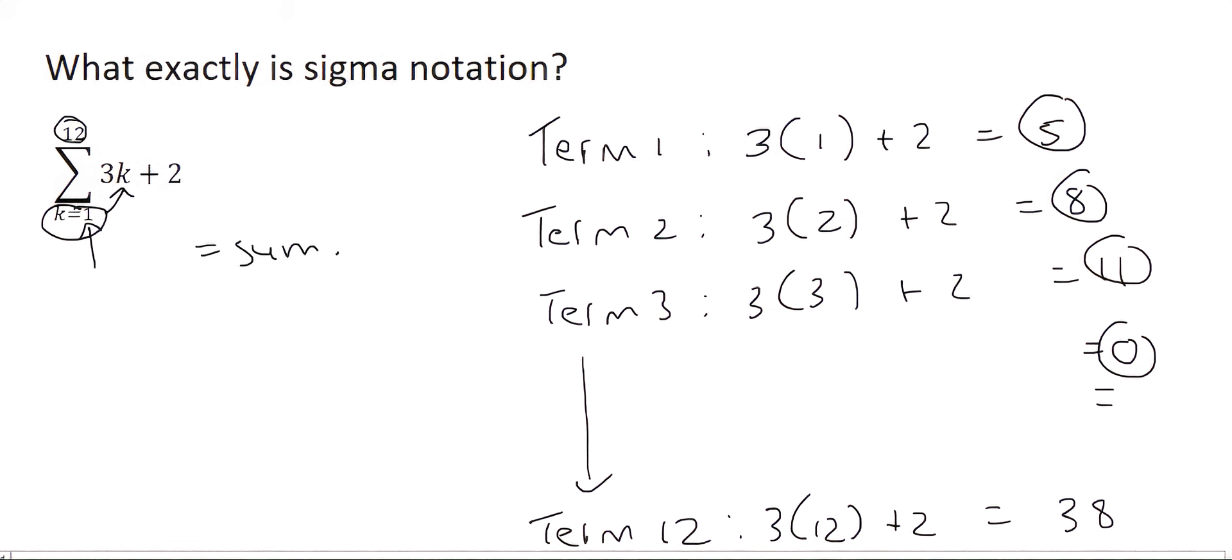But we know how to do this. We know how to take the sum, because look what type of pattern we have formed. It goes 5, 8, 11. That is an arithmetic pattern. So we could use the sum formula for an arithmetic pattern, which goes like this, where n would be your number of terms, which in this case is going to be 12.